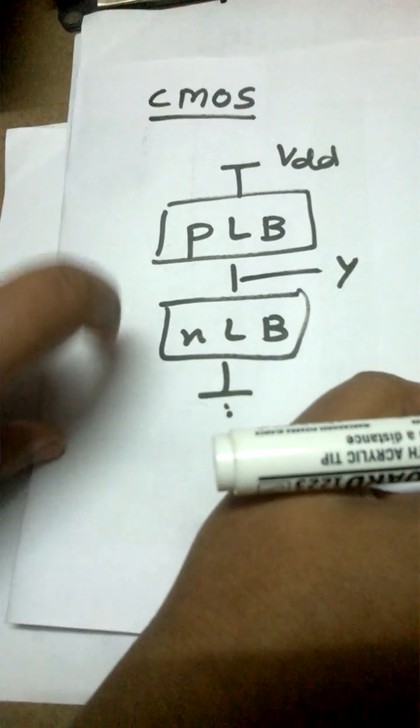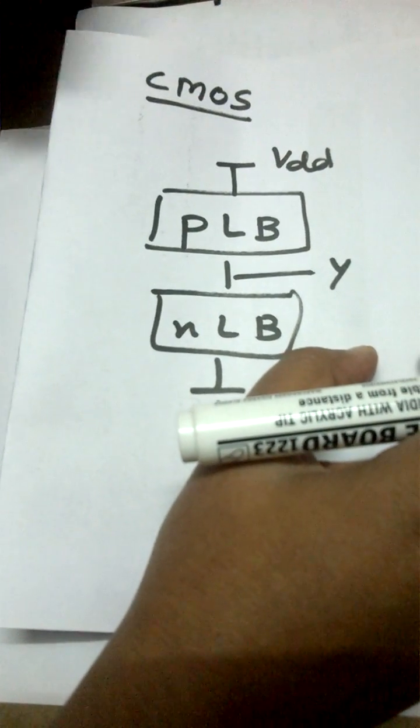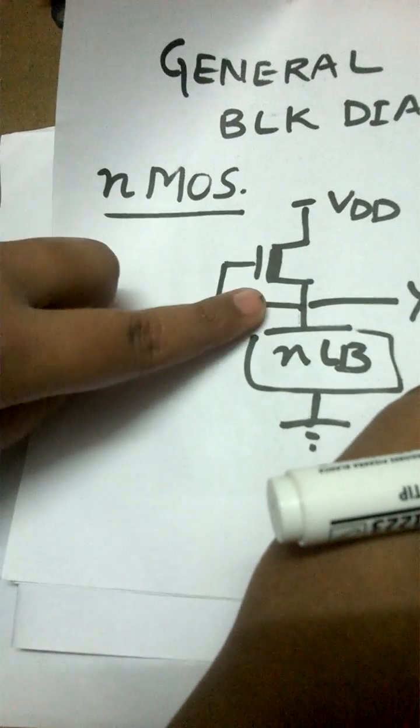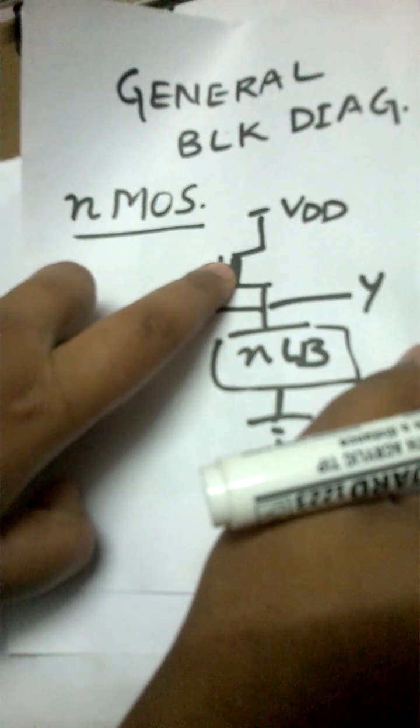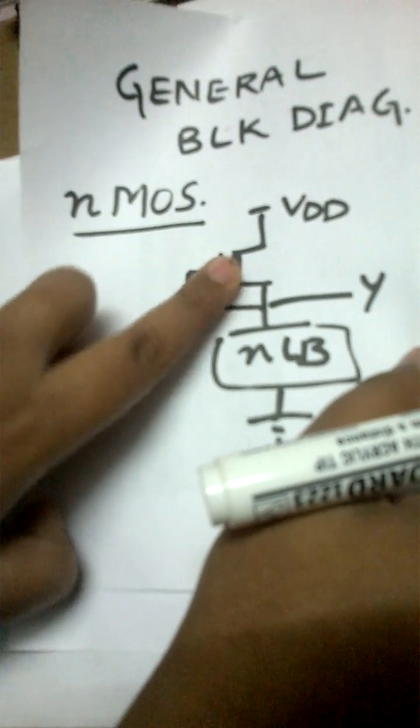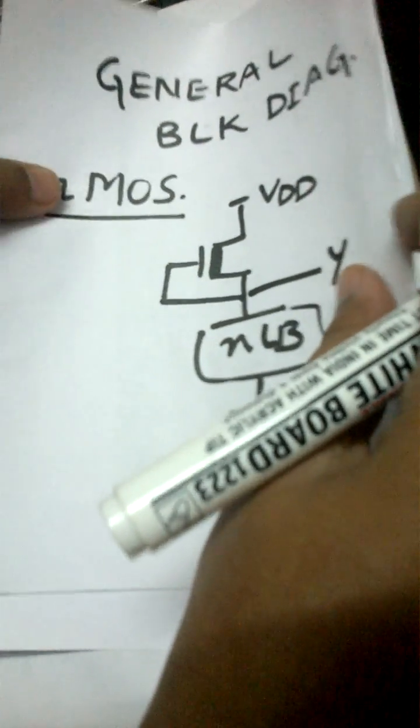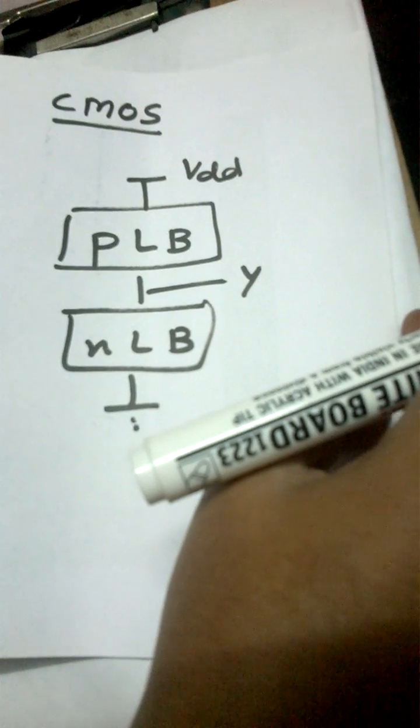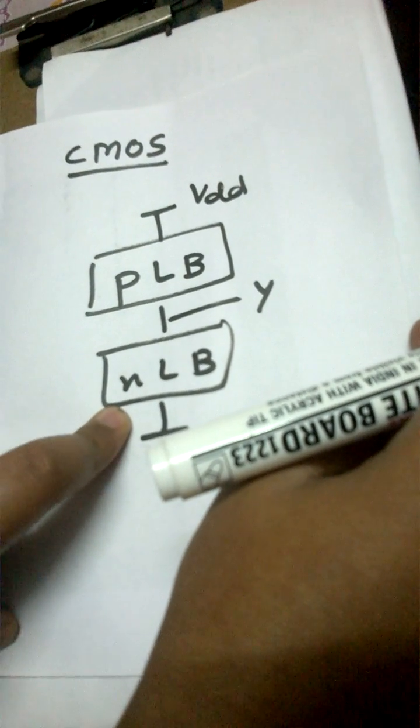As we can note the difference: in NMOS I used to have a depletion type NMOS device in the upper part of the circuit, that is the pull-up network. This is known as the pull-up network; this is the pull-down network. But now in the pull-up network I am having a P logic block. Now what is a P logic block? The way I am drawing N logic block, I'll take its complement and I'll get the P logic block.